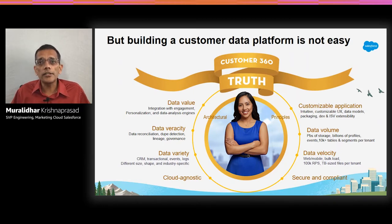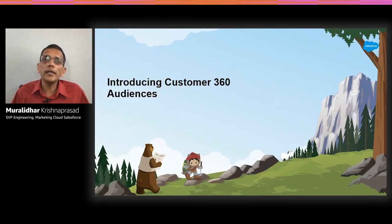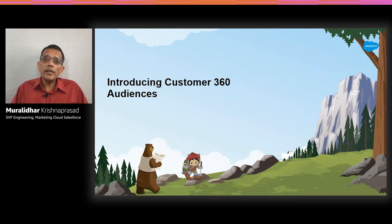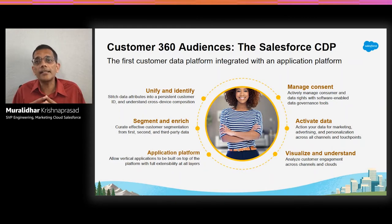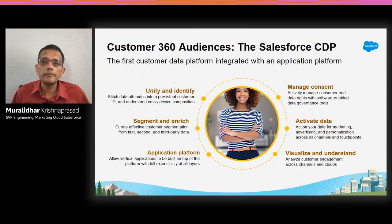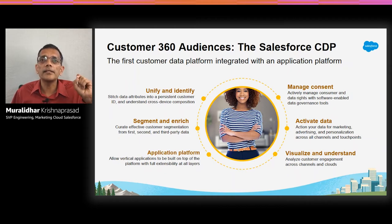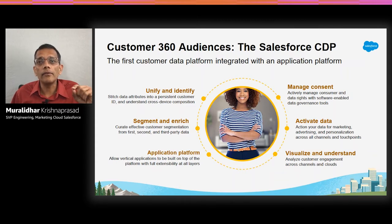I'd like to introduce Customer 360 Audiences from Salesforce, which tries to meet all this bar and also make it super easy for anybody — a marketer or anyone else — to use the system. We built it on the Salesforce Lightning platform, giving you the application platform. We do all the things a CDP needs to do: unify all your data, identify, reconcile, segment, enrich the data, manage consent, activate to all our engagement systems, and visualize and understand that data. More than anything else, this CDP is a declarative platform — that means clicks, not code — and this declarative platform also works at scale. The rest of the session, we're going to talk about how we achieve that on top of AWS to give you petabyte and exabyte scale.